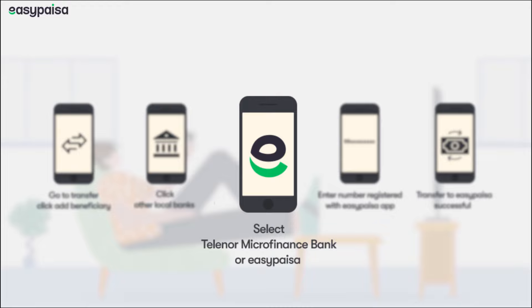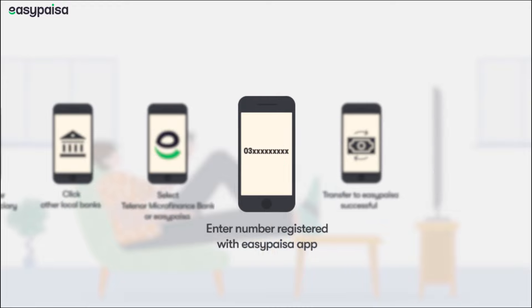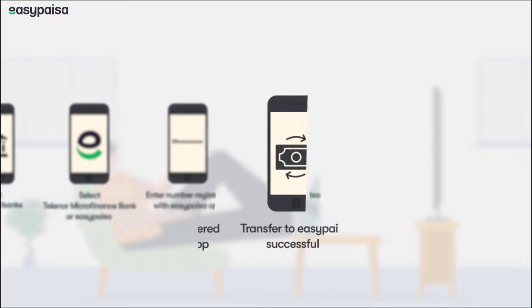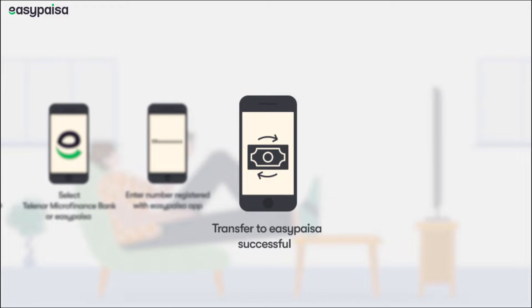When prompted to add beneficiary account number, enter the mobile number you registered your EasyPesa app with. After you've transferred the desired amount to your EasyPesa app, you'll receive a notification message confirming your deposit has been successful and absolutely free.